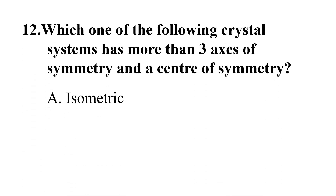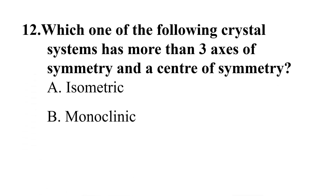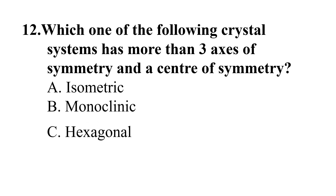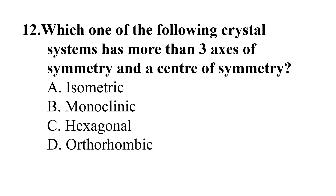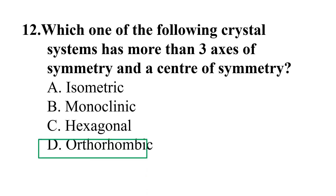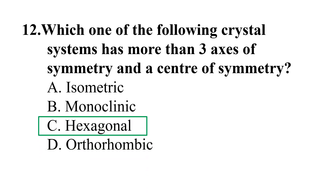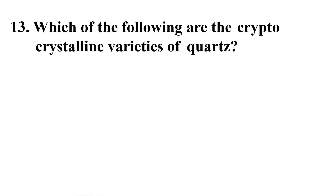Question 12: Which one of the following crystal systems has more than three axes of symmetry and a center of symmetry? A) Isometric, B) Monoclinic, C) Hexagonal, D) Orthorhombic. The correct answer is C) Hexagonal.